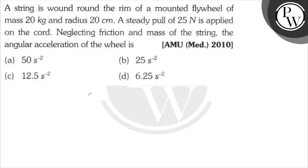Hello guys, a string is wound around the rim of a mounted flywheel of mass 20 kg and radius 20 cm. A steady pull of 25 N is applied on the cord. Neglecting friction,